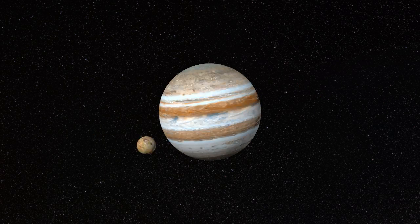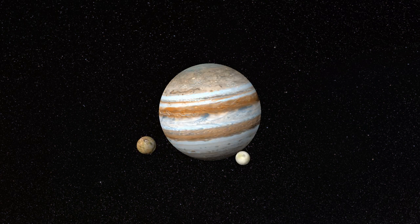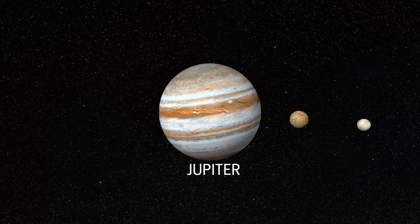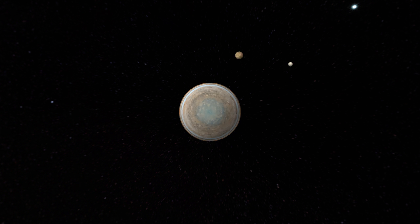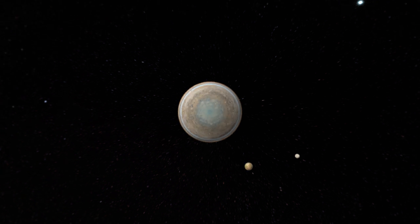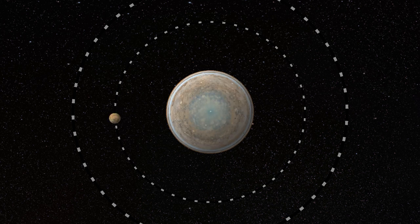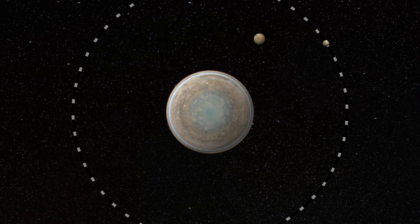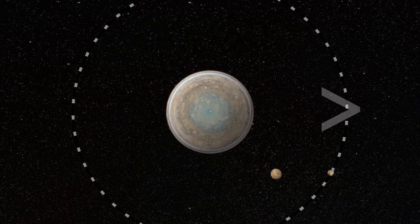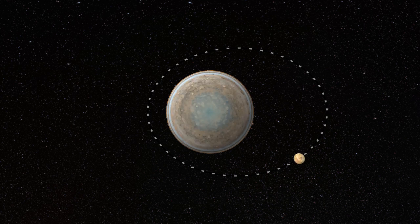With the Jupiter-Io-Europa system, we have something else happening. Jupiter is in the center, Io is the first moon out, and Europa is the second moon out. As Europa makes one orbit, Io orbits twice — Io moves twice as fast. So as they go around, every other orbit for Io, they reach the same point in their orbits. This gives a gravitational tug on Io every other time, which gives it an elliptical orbit as opposed to a circular orbit.